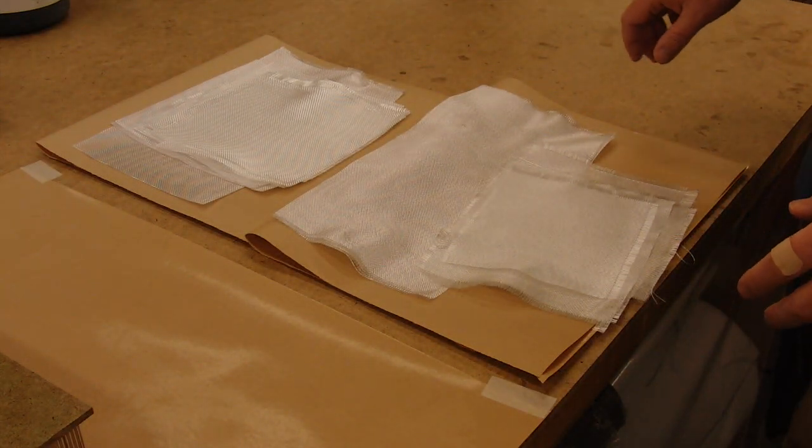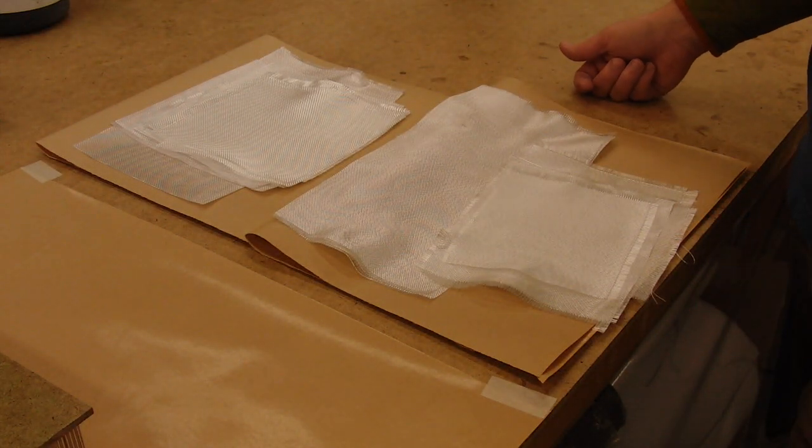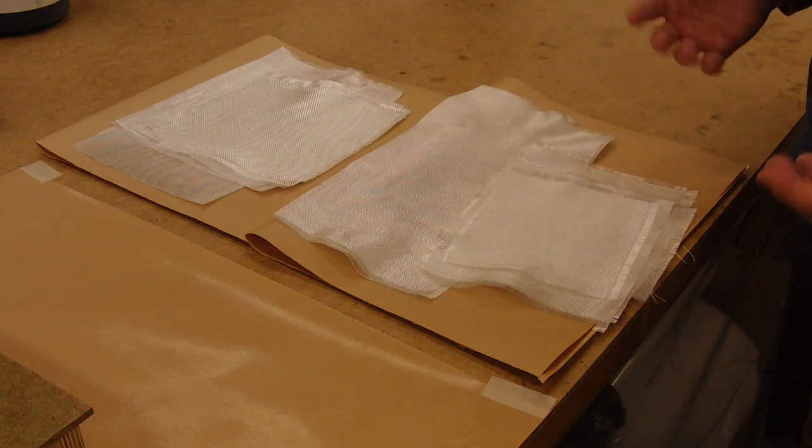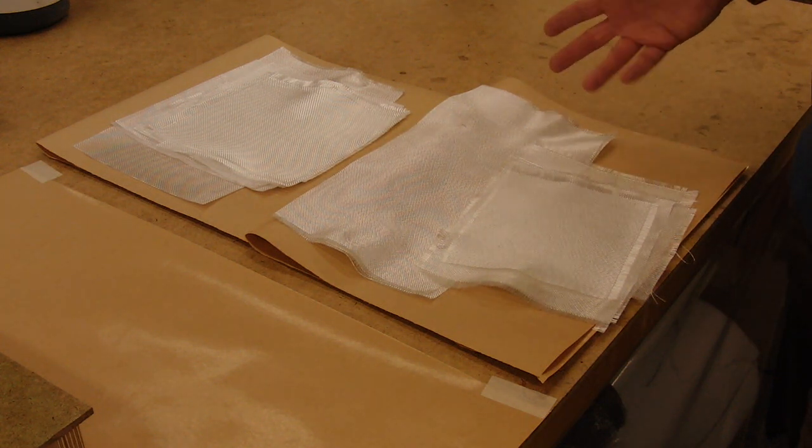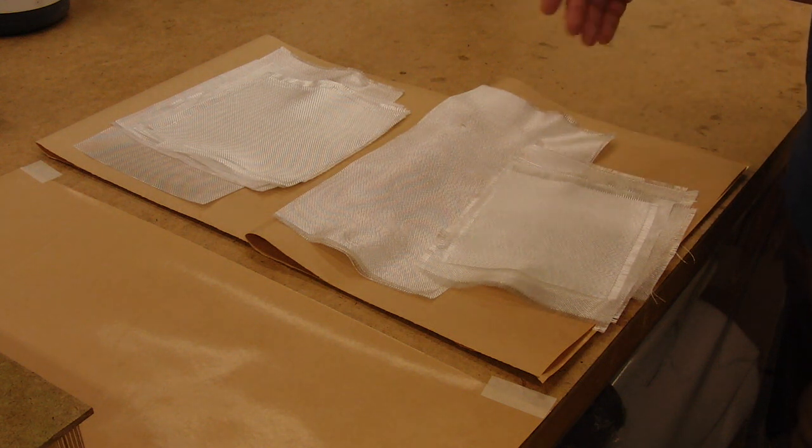Mold making is a great way to use up scraps of fiberglass. I've taken leftover cloth, cut it into squares and rectangles, just divided it up based on the pieces that I had.